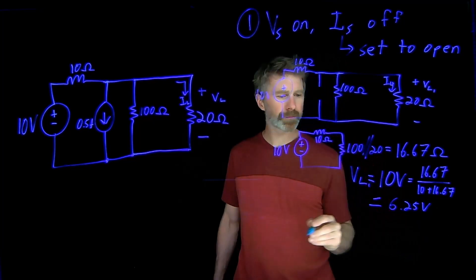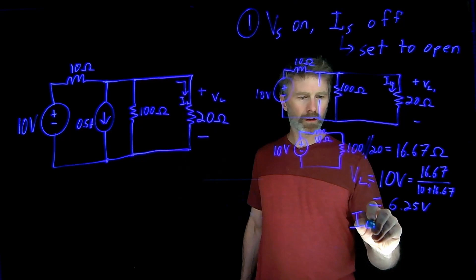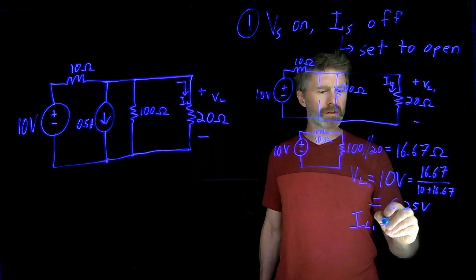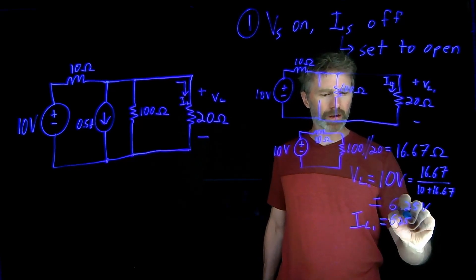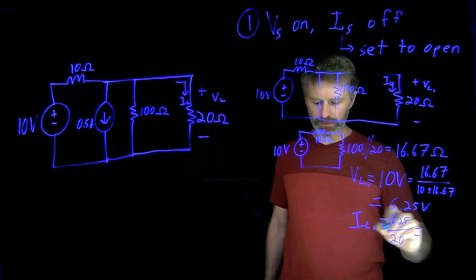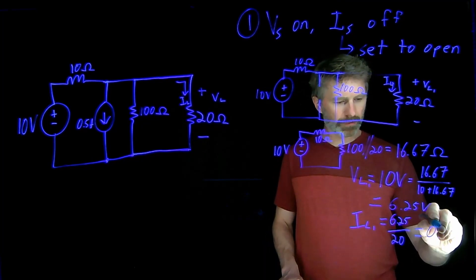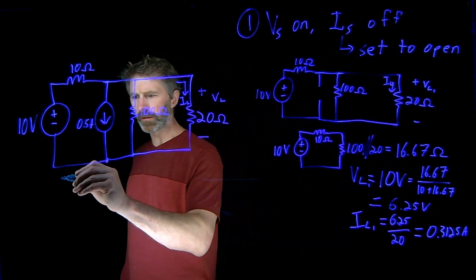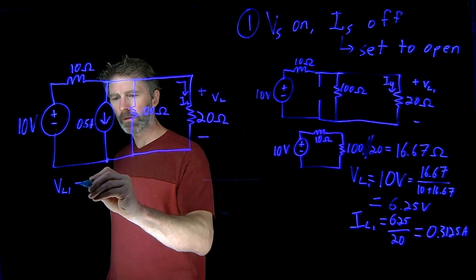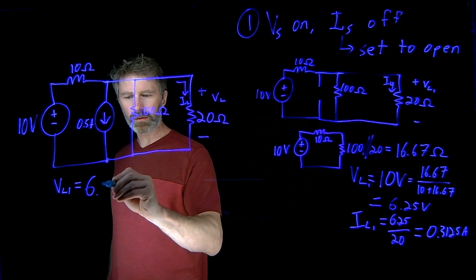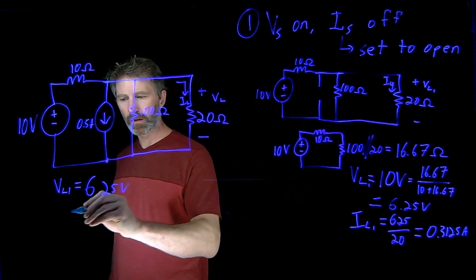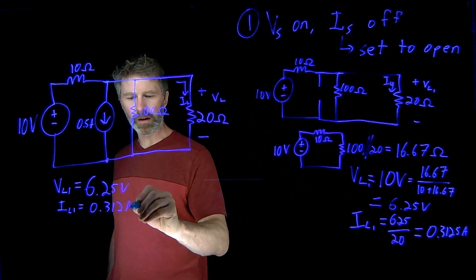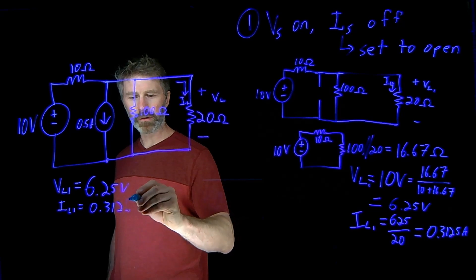So that's VL1. For IL1, since I know I've got 6.25 volts across the 20 ohm resistor, it's simply 6.25 divided by 20, which gives 0.3125 amps. So VL1 is 6.25 volts and IL1 is 0.3125 amps.